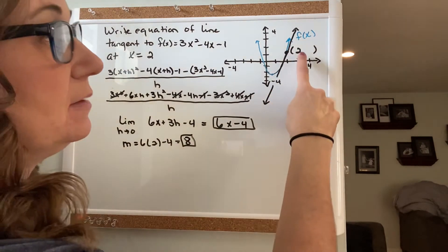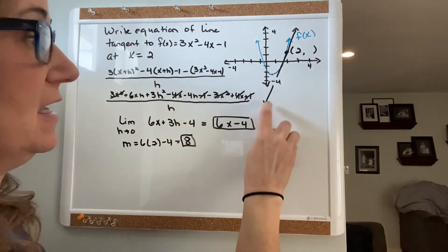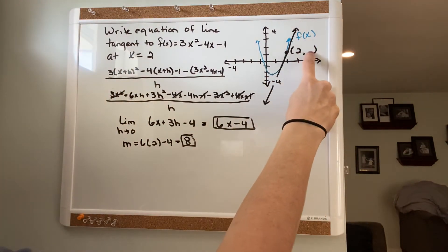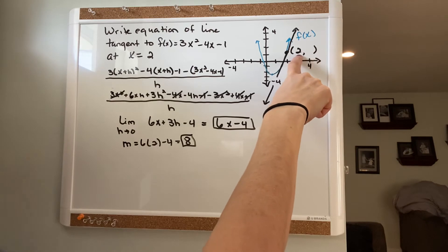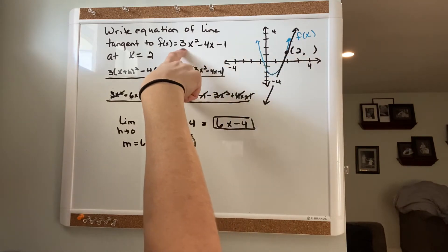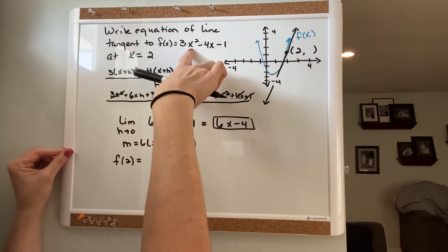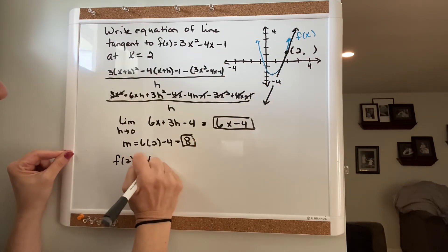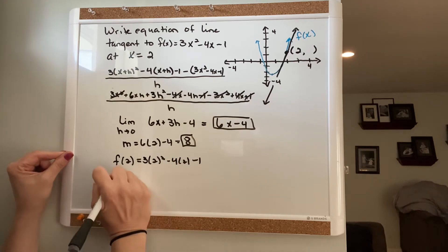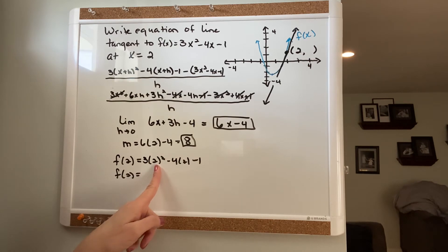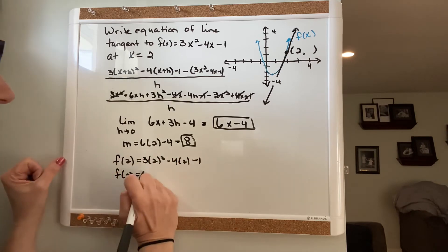So in order to write the equation of the line, you need a point and the slope. We have the slope, but we got to figure out what the y value is when x is 2. So you have to take this 2, plug it back into the original function. So f(2) would be 3 times 2² minus 4 times 2 minus 1. So f(2) would be 3 times 4, which is 12, minus 8, which is 4, minus 1 is 3.